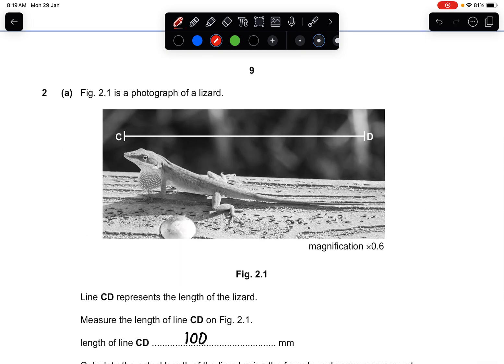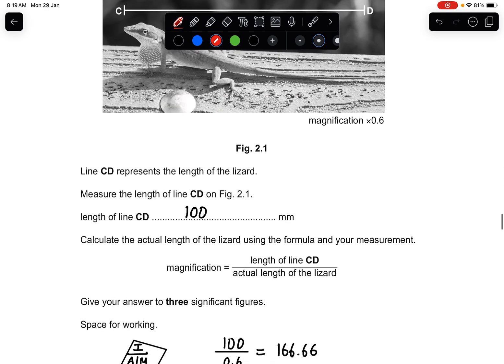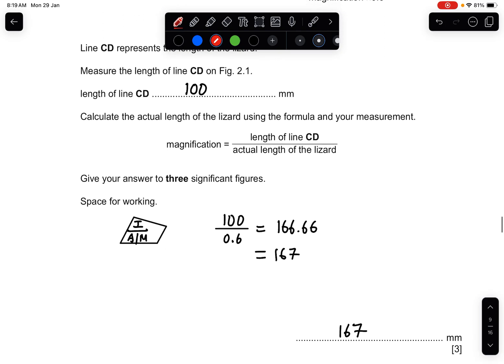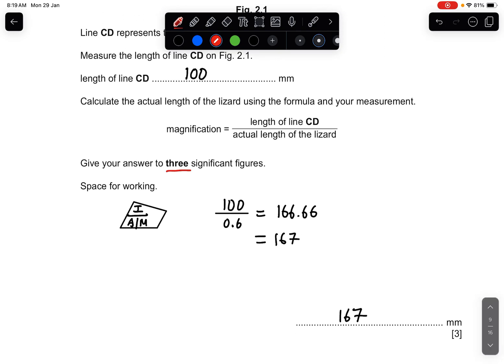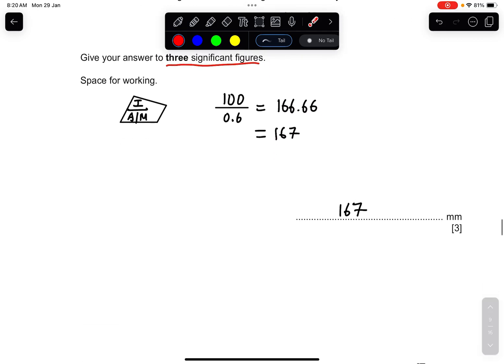Question 2A: Figure 2.1 is the photograph of a lizard. Line CD represents the length of the lizard. Measure the length of the line CD on figure 2.1. The line CD is actually 100 millimeters. Calculate the actual length of the lizard using the formula and your measurement. Keep your answer in three significant figures and show your working. I use the IAM formula where I take 100 divided by 0.6, I get 166.66. They want it in three significant figures, I change to 167, that's your answer.